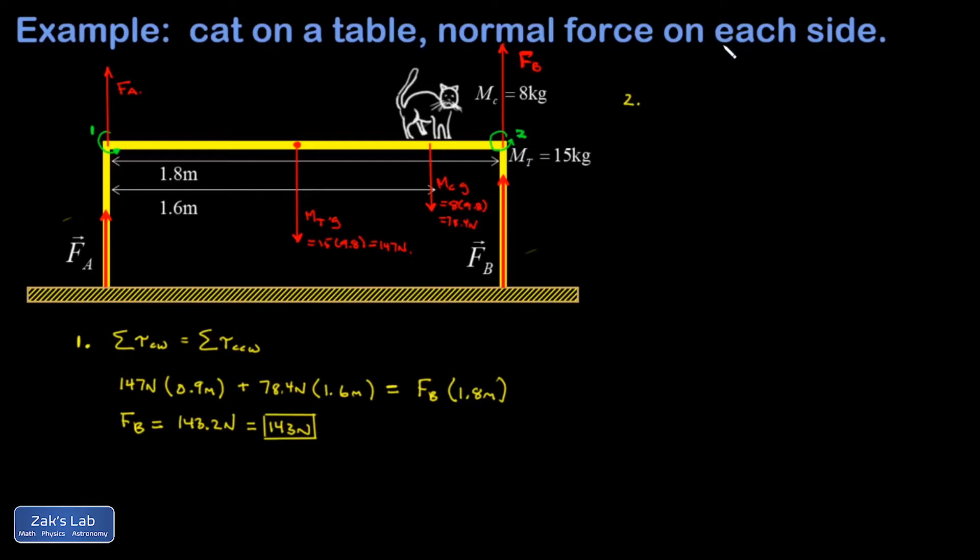Now I'm going to do the torque analysis about rotation axis 2. And of course, if you add up all the clockwise torques, you should get the same number as all the counterclockwise torques. And now with respect to rotation axis 2, it looks like F_A is exerting a clockwise torque. And so I have F_A exerted through a lever arm of 1.8 meters. And then I have gravity pulling at the center of mass exerting a counterclockwise torque. So that's 147 newtons at a distance of 0.9 meters from the right end of the table. And I have a second counterclockwise torque exerted by the cat, and that's 78.4 newtons.